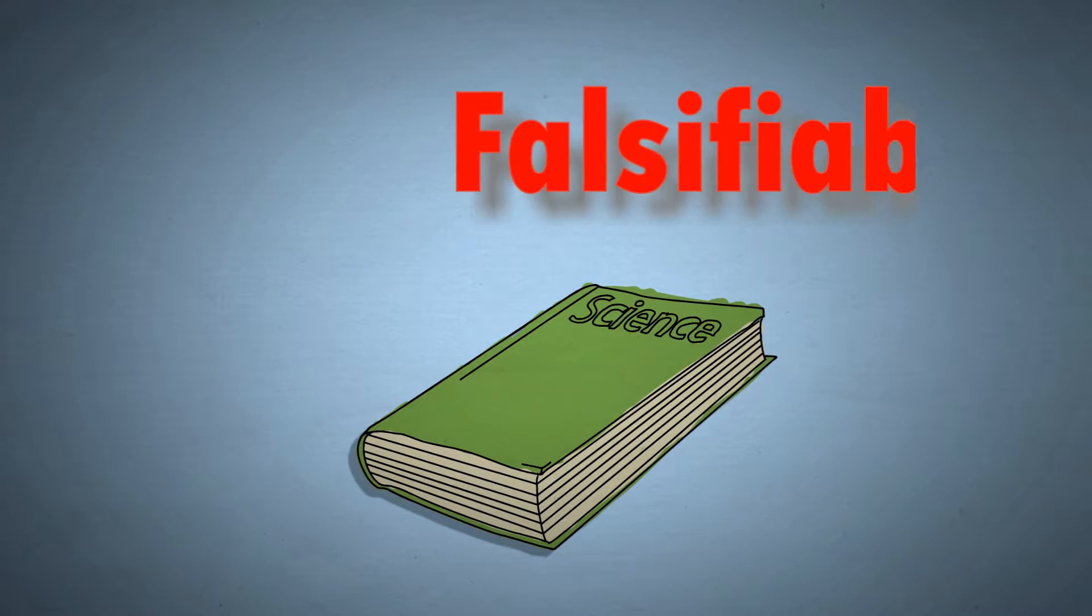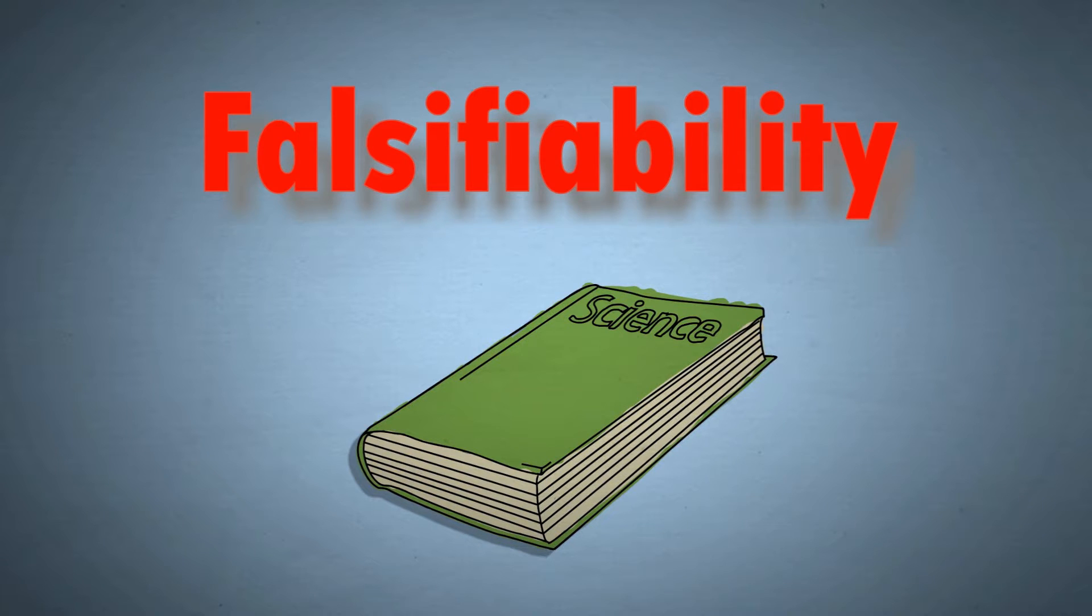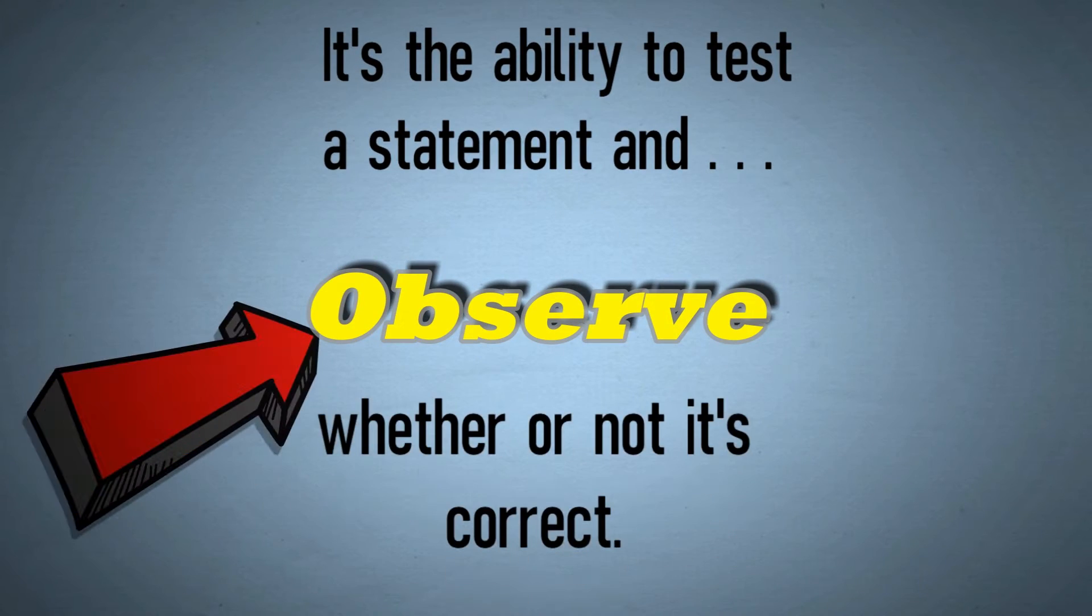In science, there's this concept known as falsifiability. And it's crucial to the process of figuring out what's true and what isn't. It's the ability to test the statement, and now pay attention because this is key: observe whether or not it's correct.